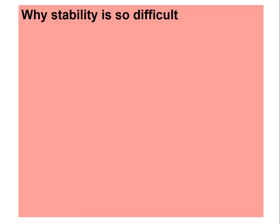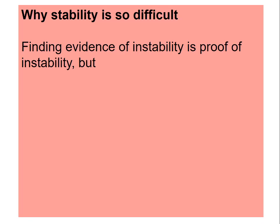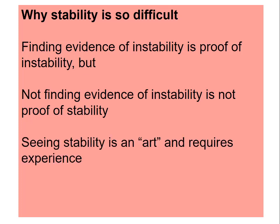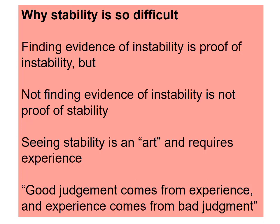Right now, I want to make a little aside and talk about why stability is so difficult to determine. If you do happen to find some evidence of instability, then you're lucky. You've proven that the structure is unstable. On the other hand, if you don't find evidence of instability, you're still never 100% sure that it's stable. This means that seeing stability in a structure is an art. There's no equation that you can apply to determine it. It requires experience to do it well. This reminds me of a famous quote that says that good judgment comes from experience and experience comes from bad judgment.